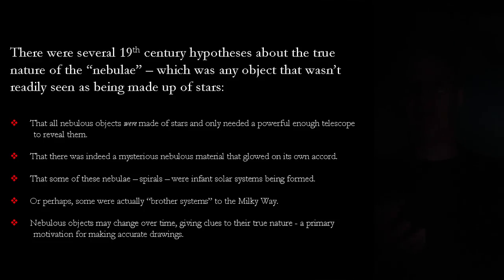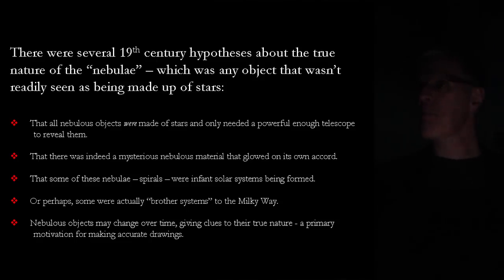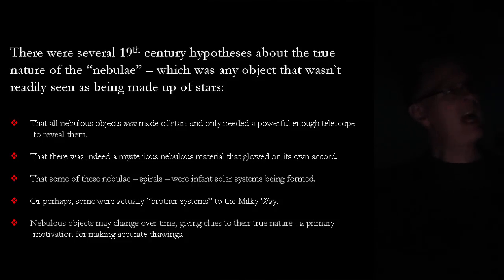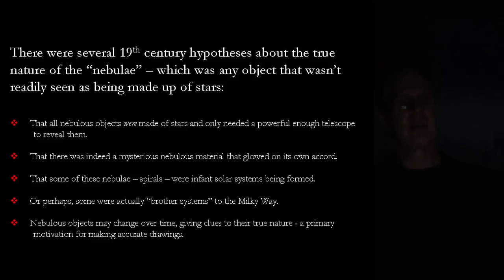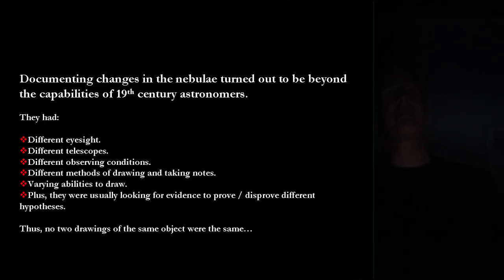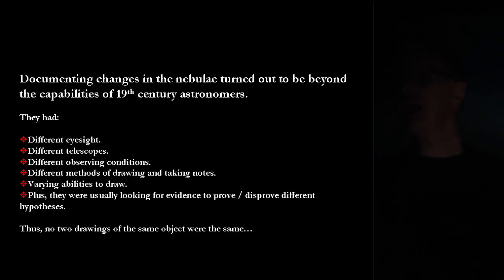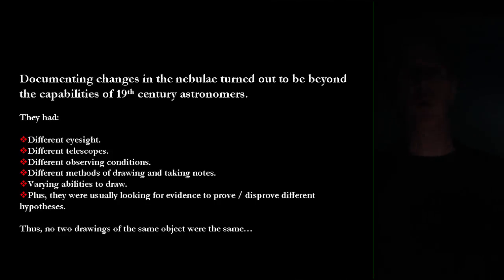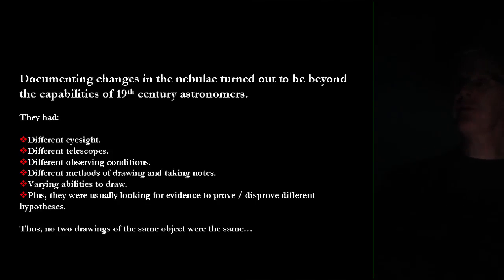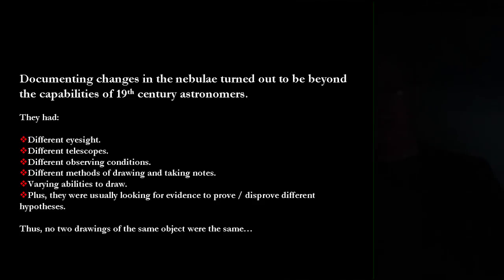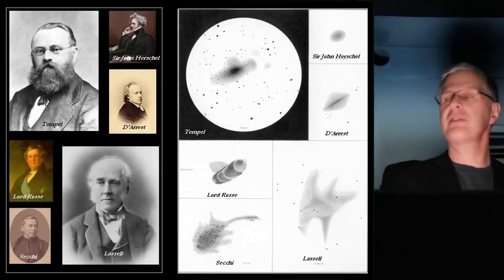Along with these hypotheses was the thought that these objects might change over time, and that if accurate enough drawings could be made, those changes could be tracked. That turned out to be impossible, because all astronomers had different eyesight, different telescopes, different observing conditions, and wildly different methods of drawing and taking notes. Some were horrible sketchers, some were quite good. Plus, they were usually looking for evidence to prove or disprove differing hypotheses. Add all that up — no two drawings of a single object were really the same.